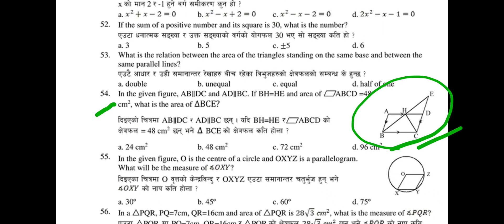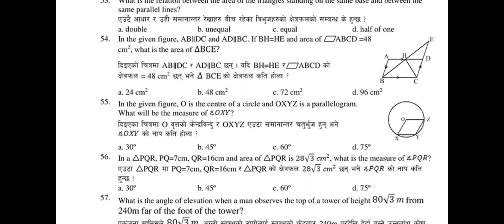Question 54: In the given figure, AB is parallel to DC and AD is parallel to BC. If BH equals HE and the area of parallelogram ABCD equals 48 cm², what is the area of triangle BCE? Select the correct answer from ABCD.